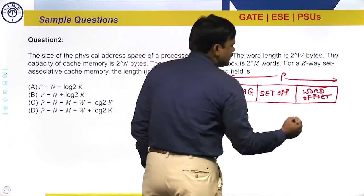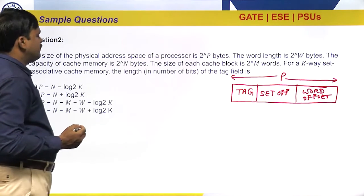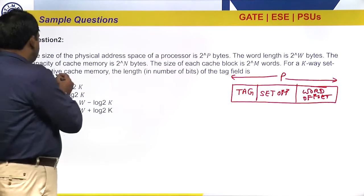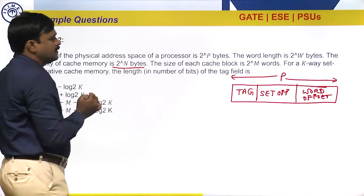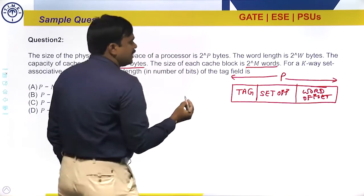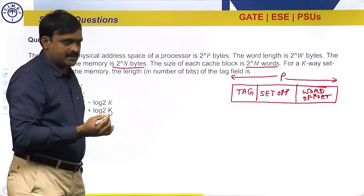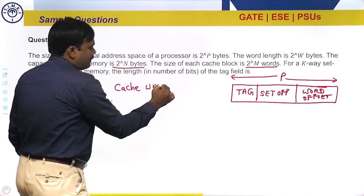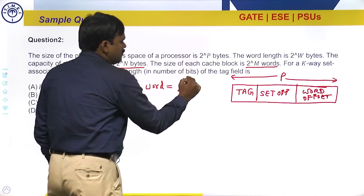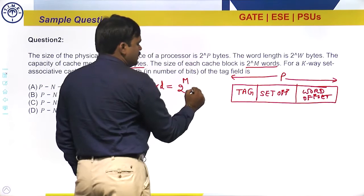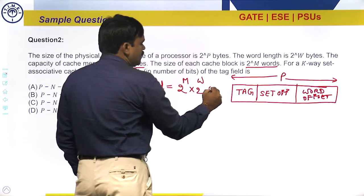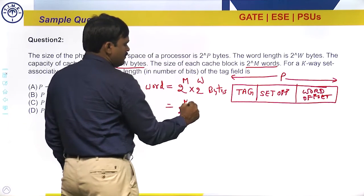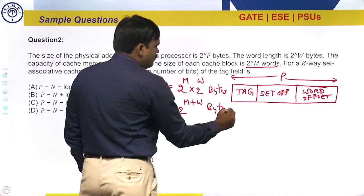The size of the physical address space is 2^p bits. The word length is 2^w bytes and the cache memory capacity is 2^n bytes. The size of the cache block is 2^m words. First, convert the cache block size into bytes: cache block size equals 2^m words multiplied by 2^w bytes per word, giving 2^(m+w) bytes.